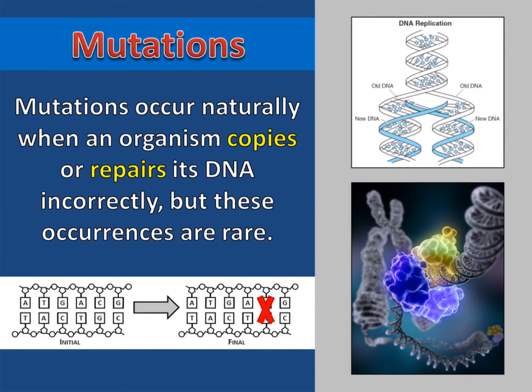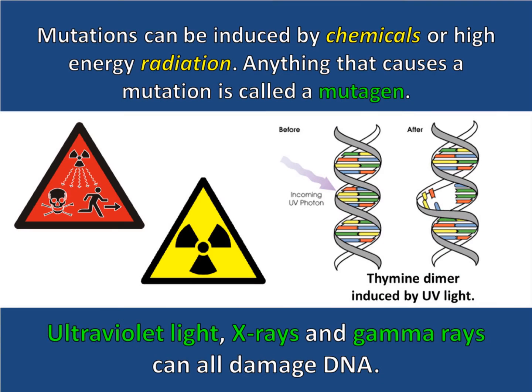Mutations can occur naturally when an organism copies or repairs its DNA incorrectly, but these occurrences are rare. Mutations can also be induced by chemicals or high-energy radiation. Anything that causes a mutation is called a mutagen.